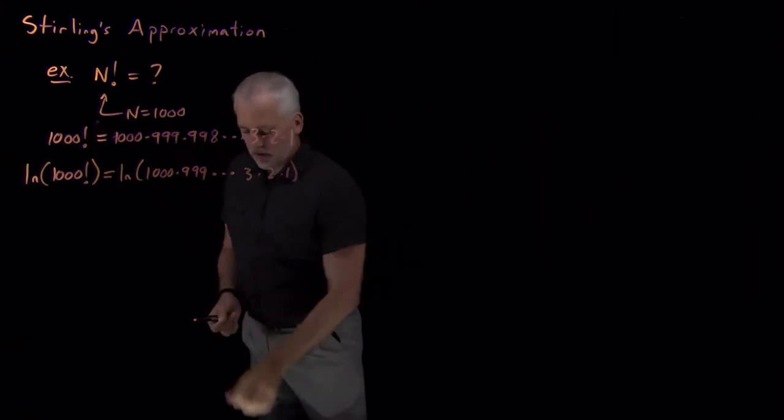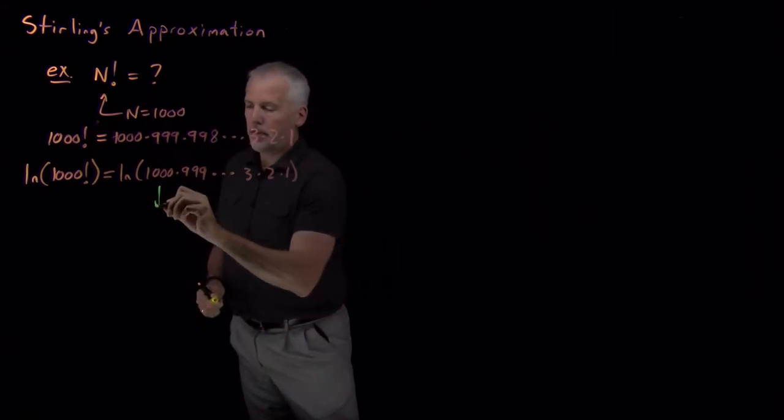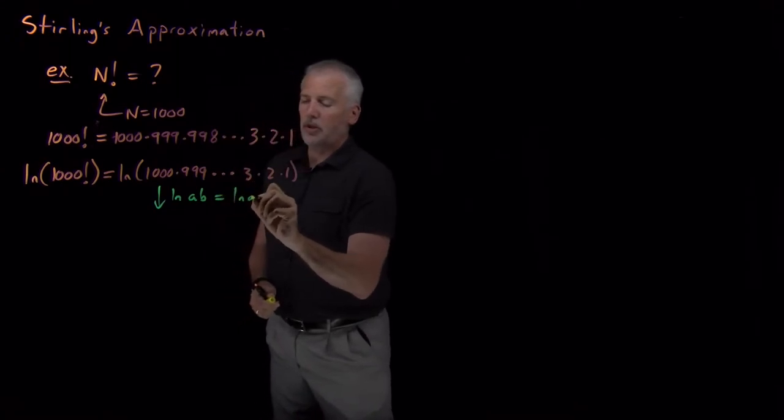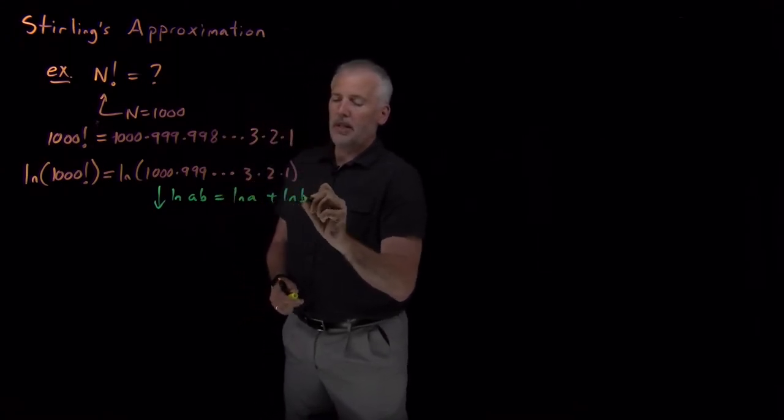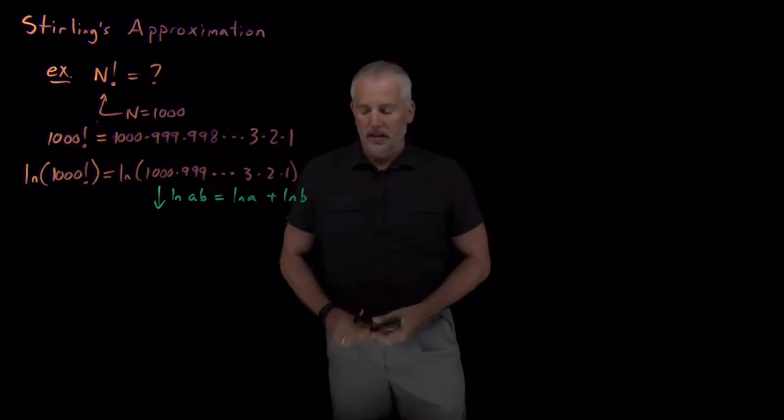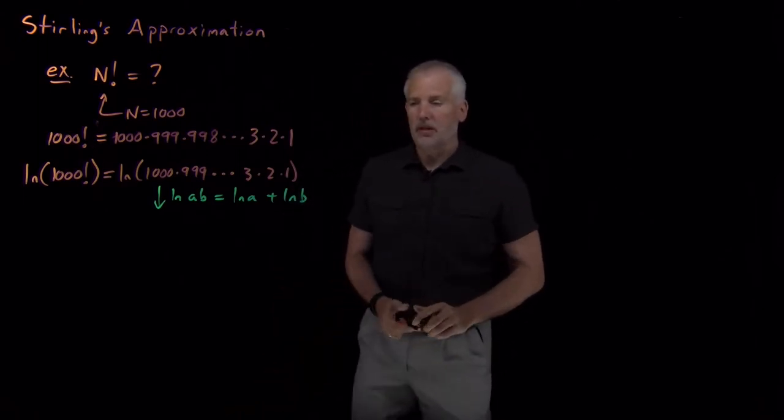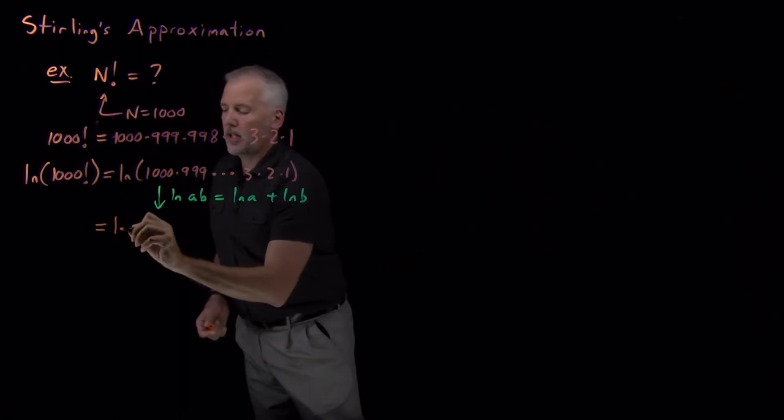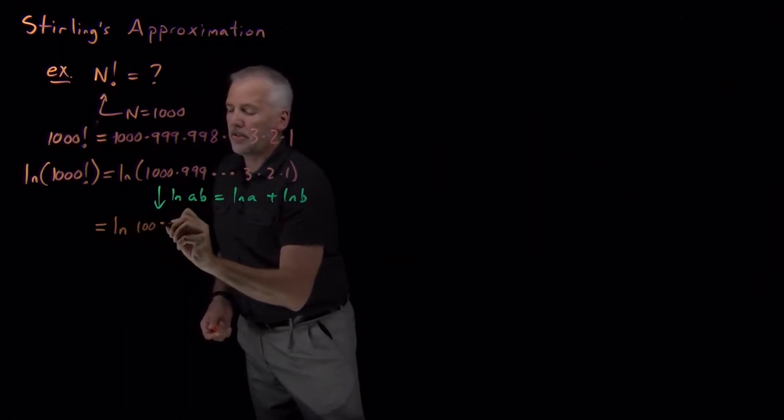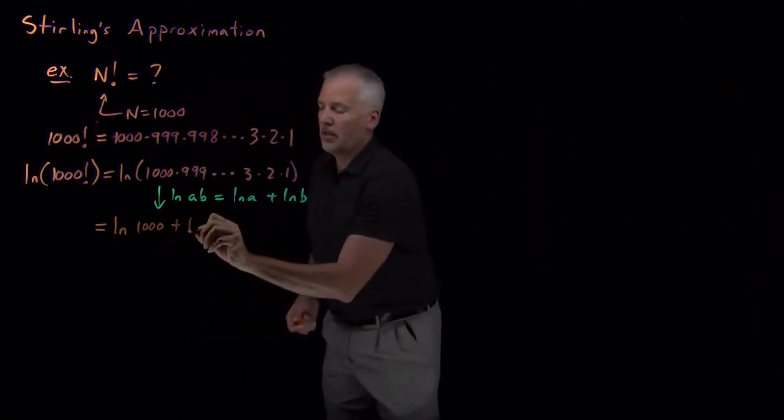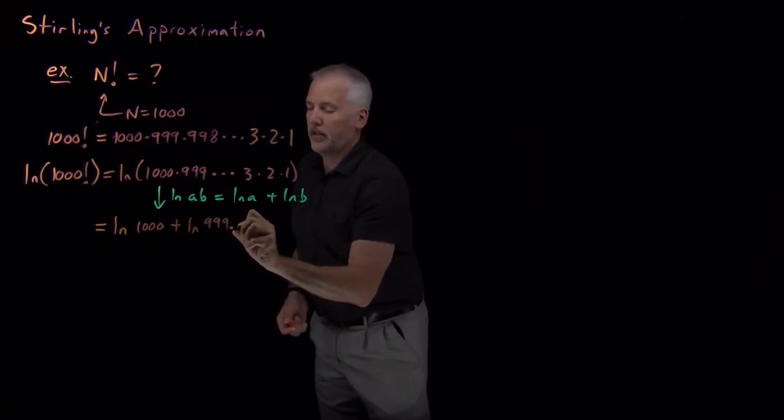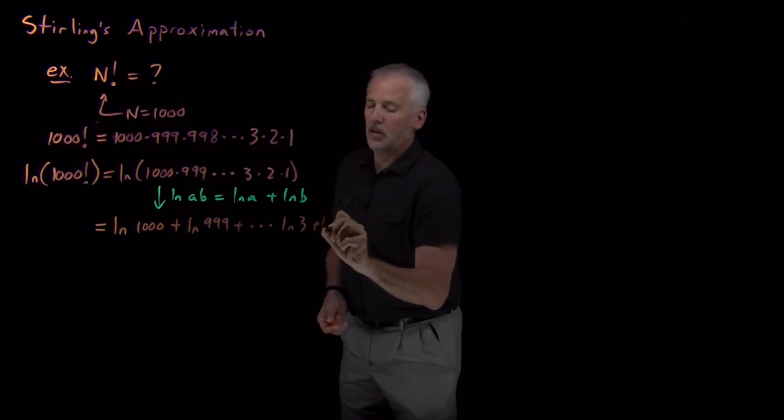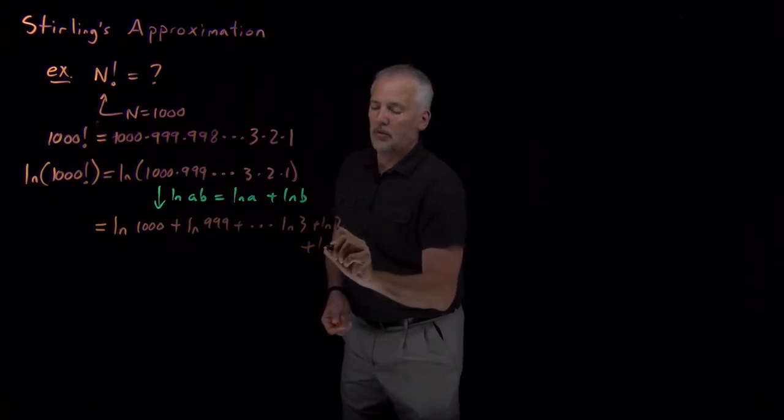If you remember your log rules, in particular, that log of a product a times b is equal to log of a plus log of b, a log of a product is the sum of the natural logs. So this log of this complicated product is the log of 1,000 plus the log of 999 plus and so on down to the log of 3, log of 2, log of 1.